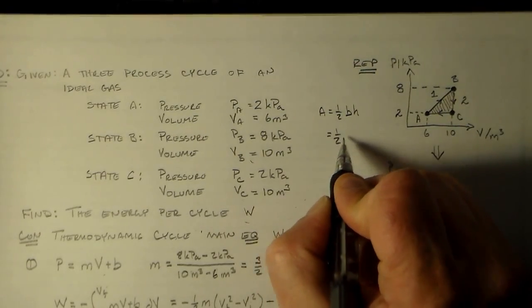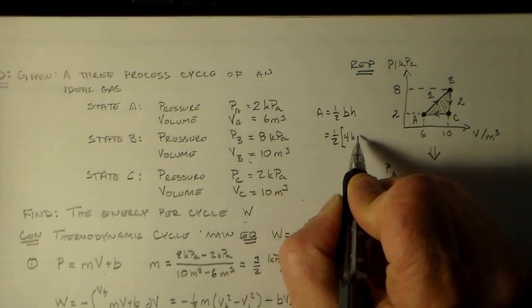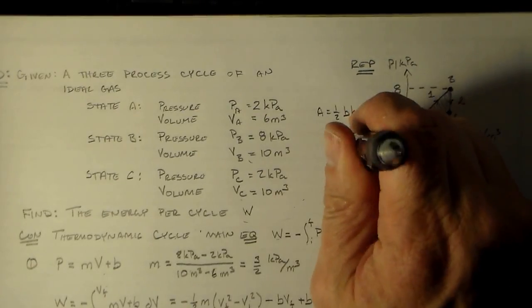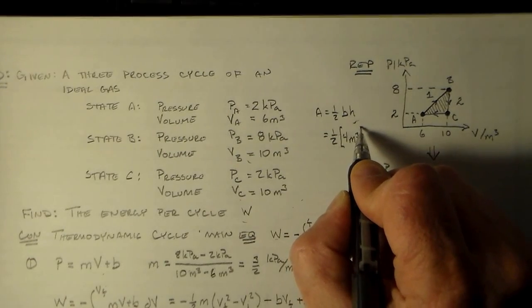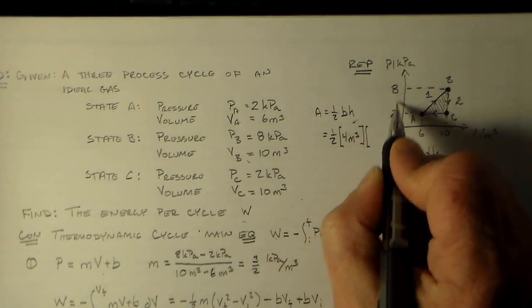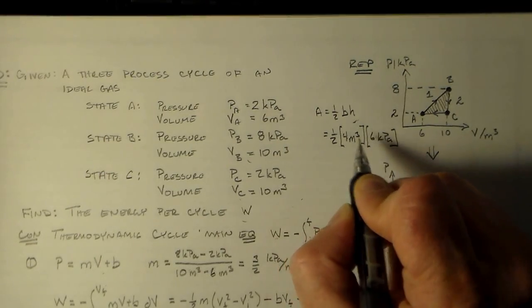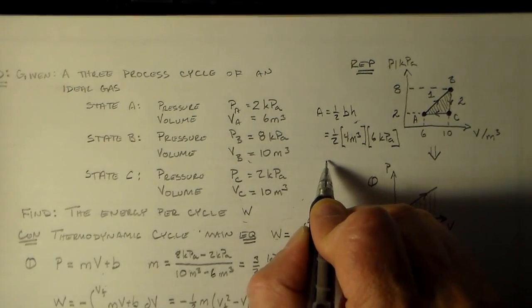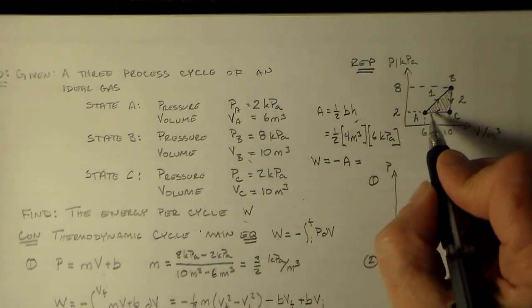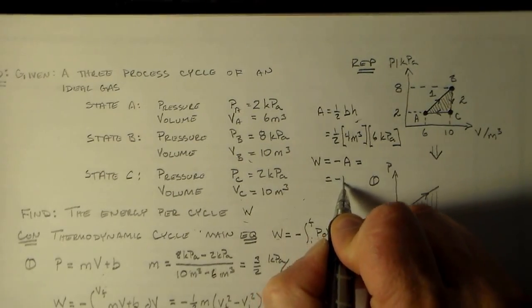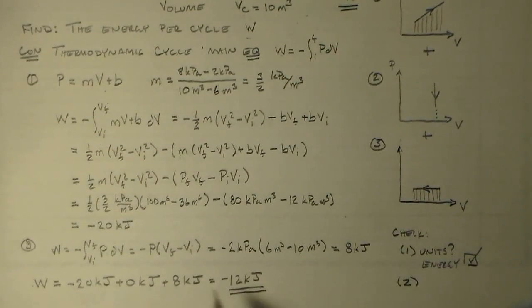The area of the triangle is one half base times height. The base is 10 minus 6 or 4 meters cubed. And the height is 8 minus 2, which is 6 kilopascals. So 6 times 4 is 24 divided by 2 is 12. The work is minus A because this is going counterclockwise. So this is minus 12 kilojoules, which is exactly what we got.